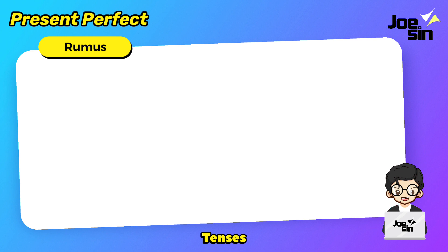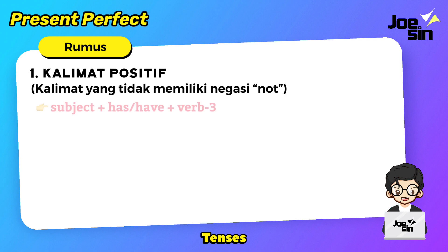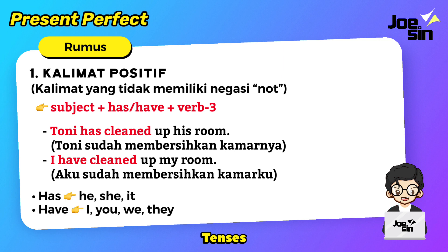Sekarang yang terakhir adalah rumus present perfect tense. Fokus pada frasa, bukan pada kata kerjanya bentuknya saja. Ciri frasa tense ini adalah have or has, kemudian ditambahkan verb three. Kalimat bisa menjadi tiga bentuk. Yang pertama kalimat positif — tanpa negasi not. Rumusnya: subject + has/have + verb three. Contoh: Tony has cleaned off his room — Tony sudah membersihkan kamarnya. Or: I have cleaned off my room. Pemilihan has atau have disesuaikan dengan subjek. Untuk subjek tunggal he, she, it gunakan has. Untuk I, you, we, they gunakan have.